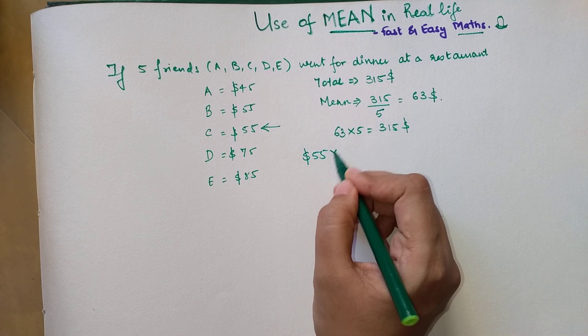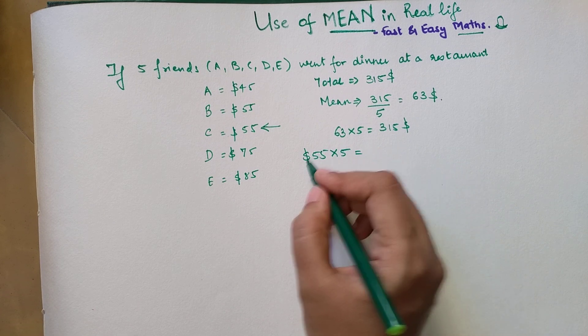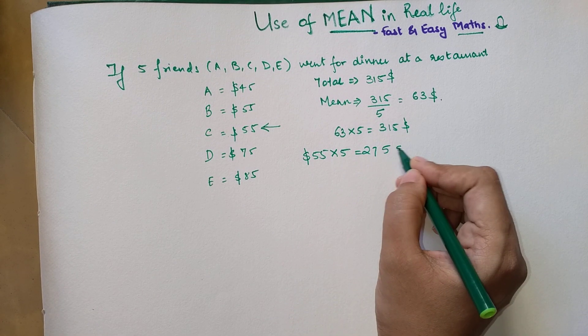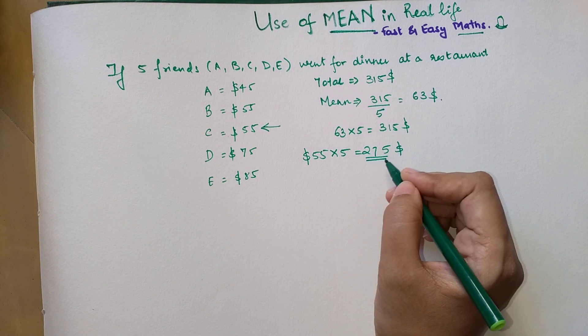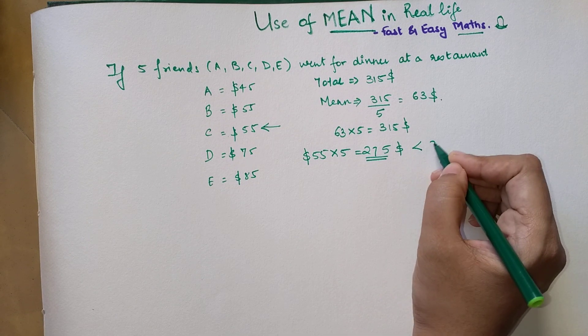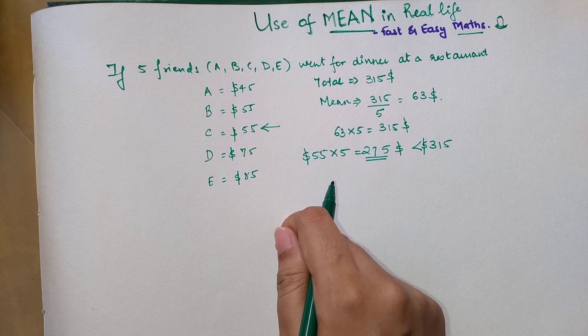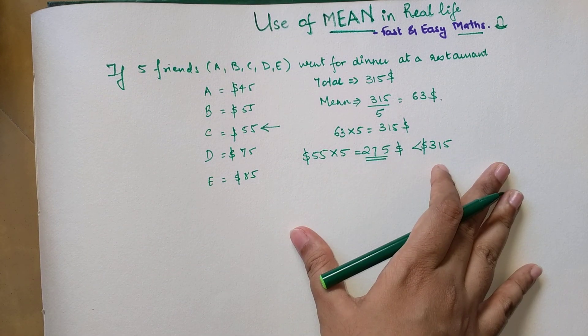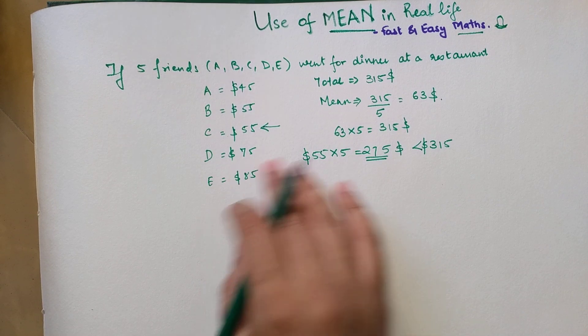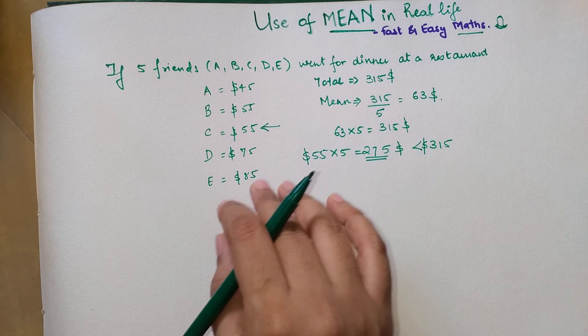So if they had taken median, $55 when you multiply by 5, you come to the total of $275, which is far lesser than the actual total of $315. So you understood that here in this particular scenario you won't be able to use the median.